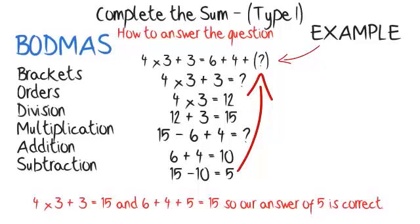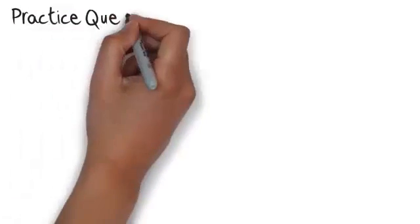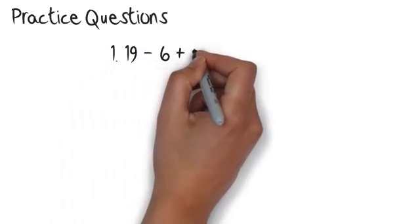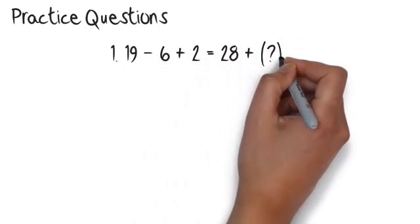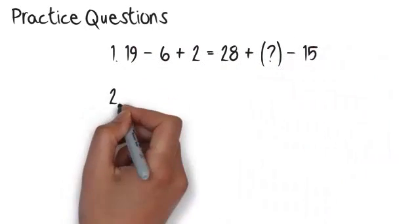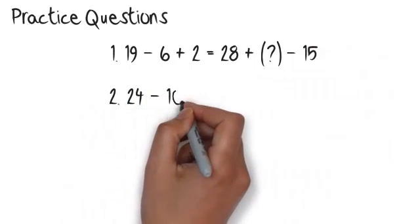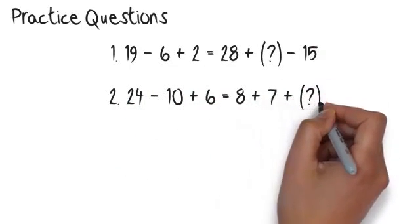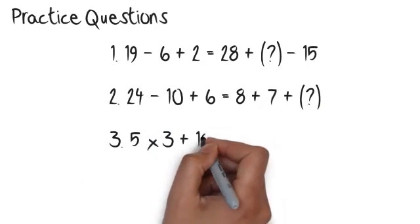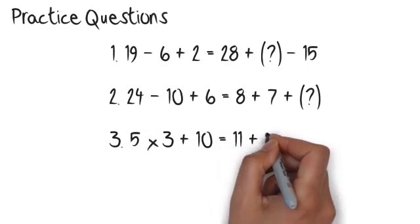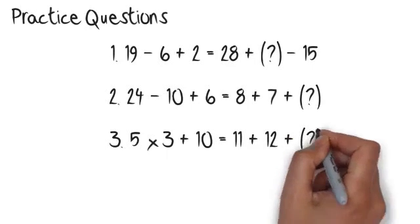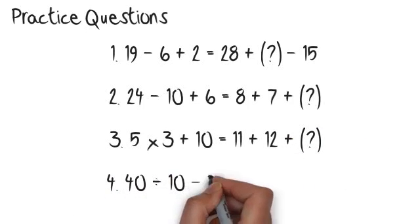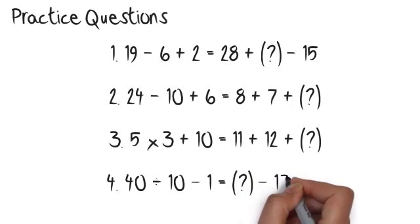Practice questions. Number 1: 19 subtract (6 plus 2) equals 28 plus ___ subtract 15. Number 2: 24 subtract (10 plus 6) equals 8 plus 7 plus ___. Number 3: 5 multiplied by 3 plus 10 equals 11 plus 12 plus ___.